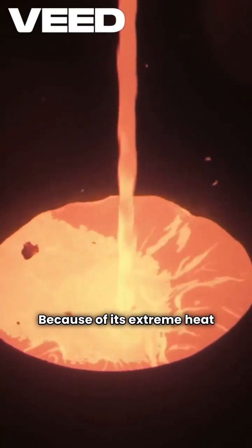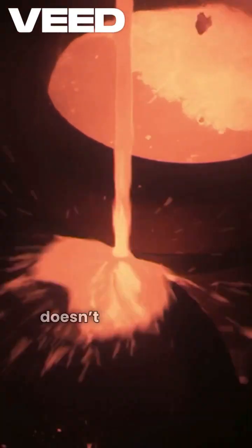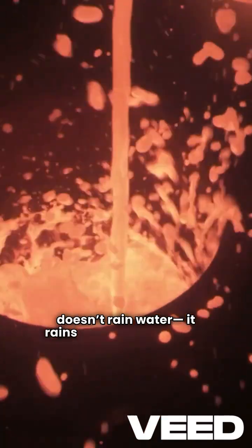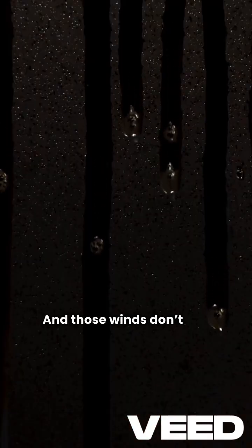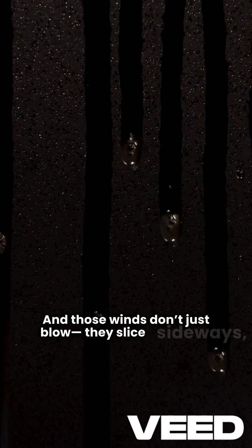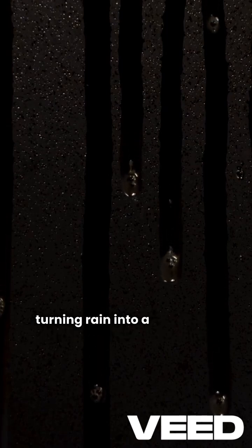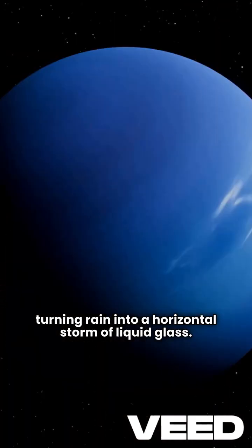Because of its extreme heat and atmospheric chemicals, it doesn't rain water. It rains tiny shards of glass. And those winds don't just blow, they slice sideways, turning rain into a horizontal storm of liquid glass.